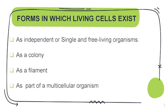Forms in which living cells exist. We have different cells, and these cells exist in different forms. Basically, we have four forms: first, living cells exist as independent or single — also called free-living organisms; second, living cells exist as a colony; third, living cells exist as a filament; and fourth, living cells exist as part of a living organism.